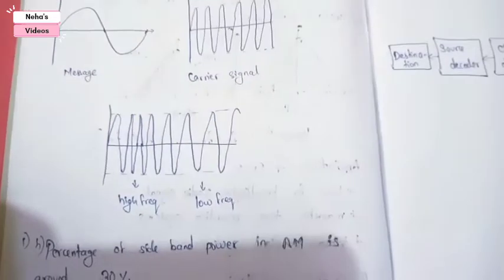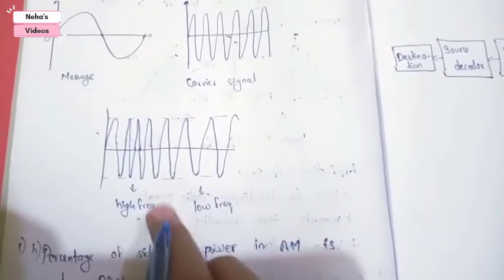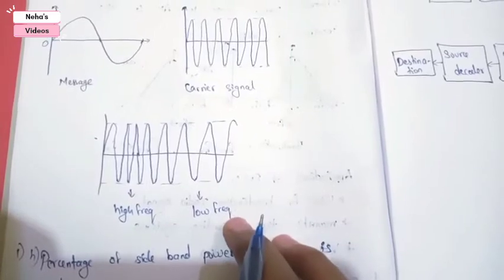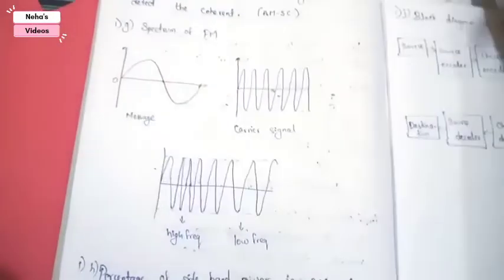In the diagram I have also mentioned the high frequency and low frequency, so that whoever is doing the correction will be clear that this is high frequency and here the student is indicating low frequency.